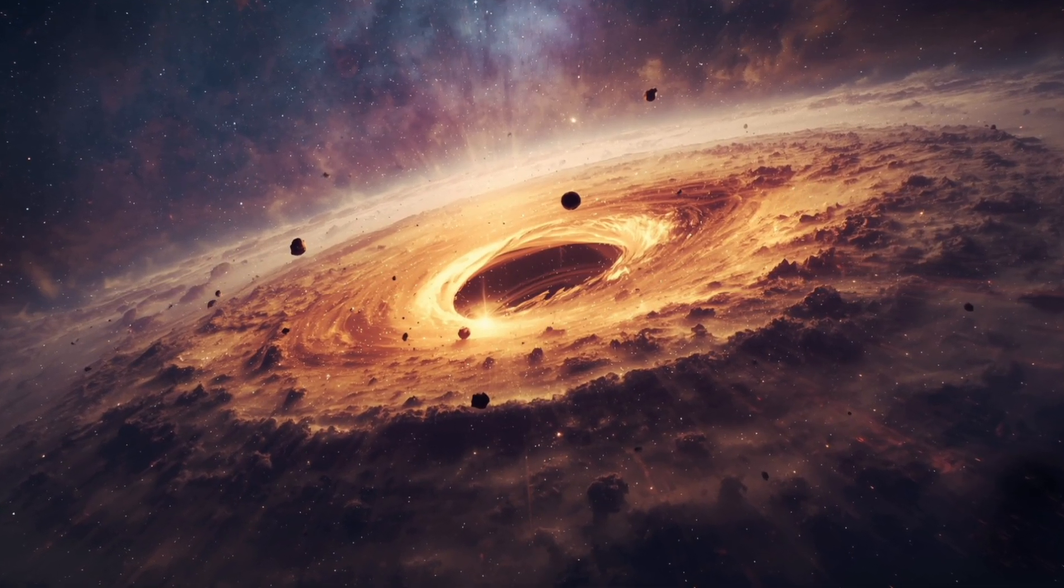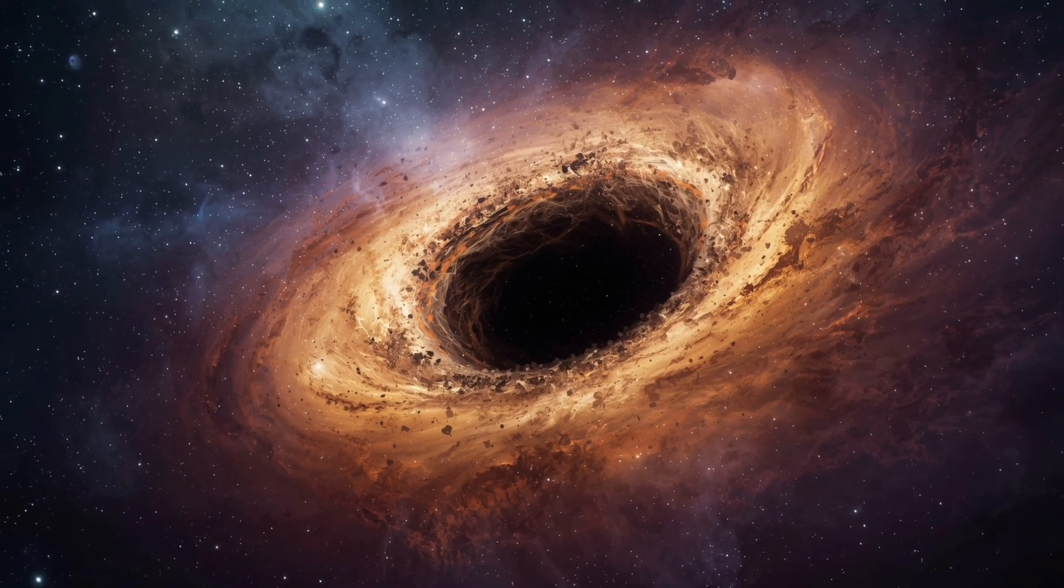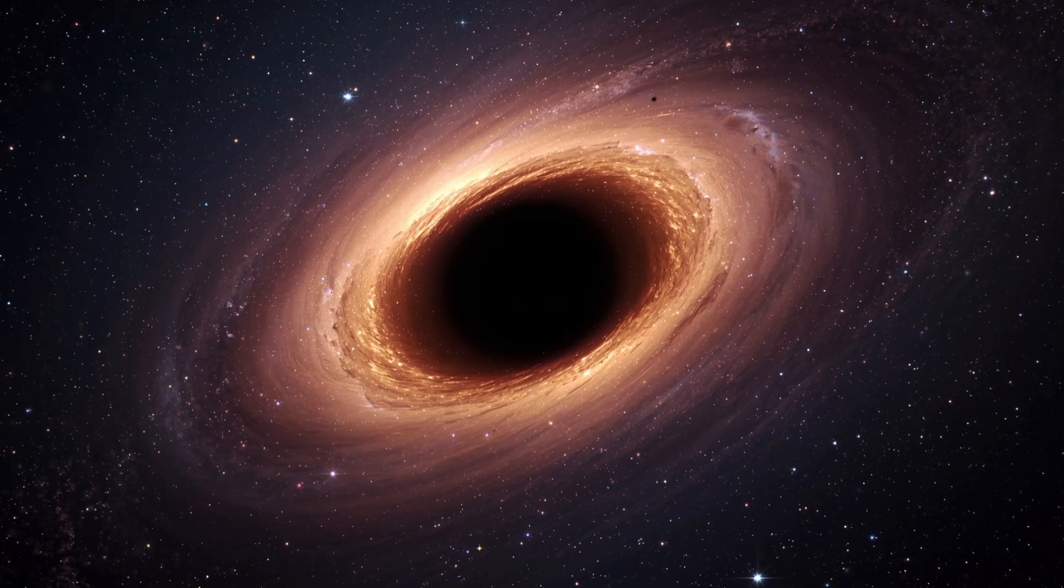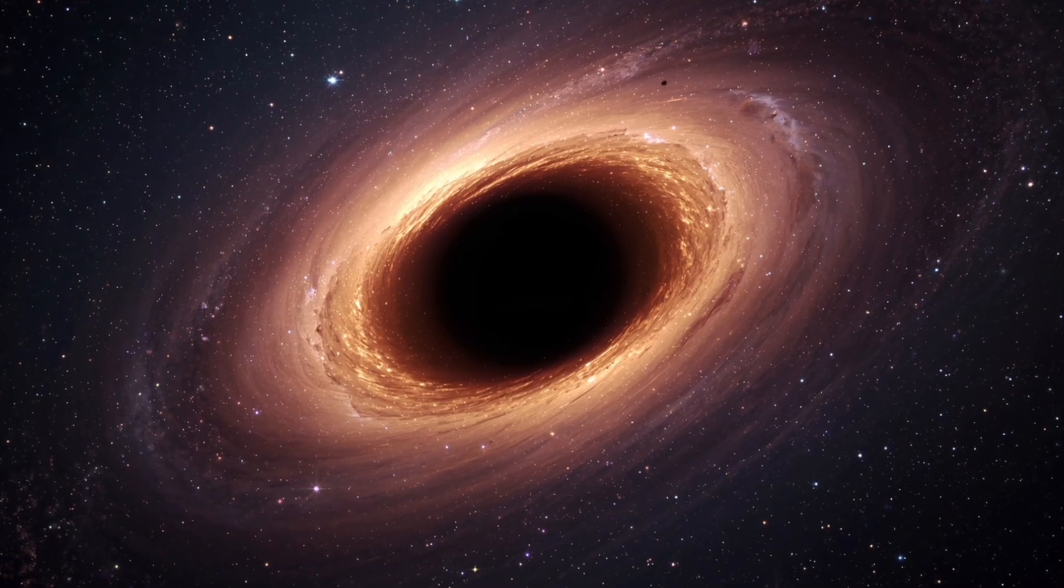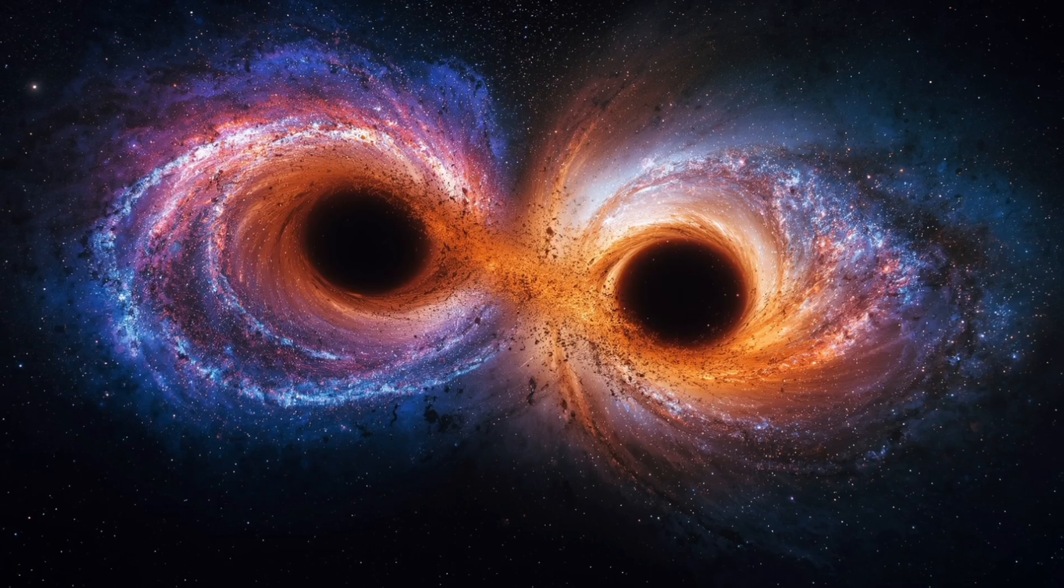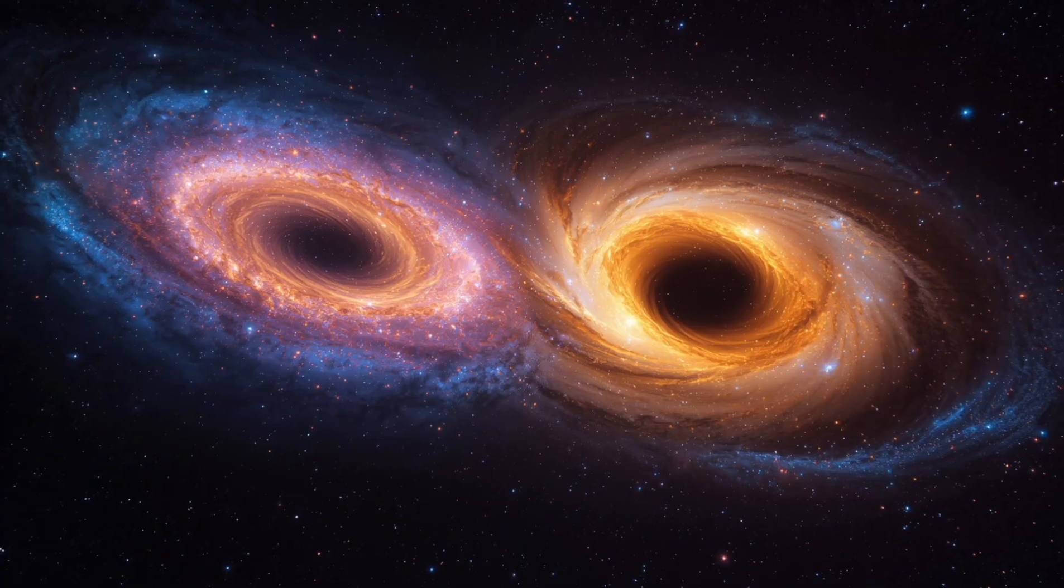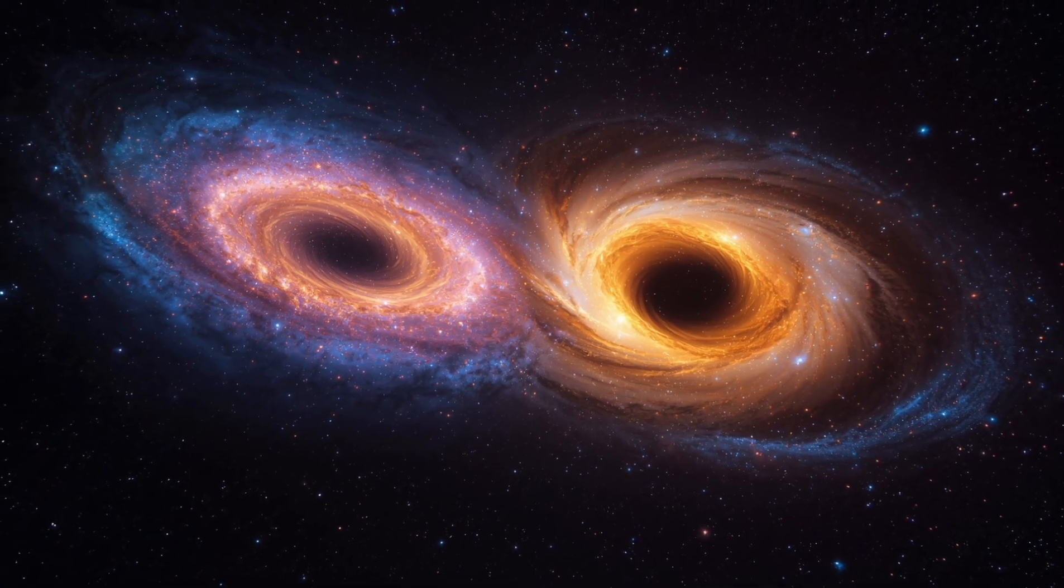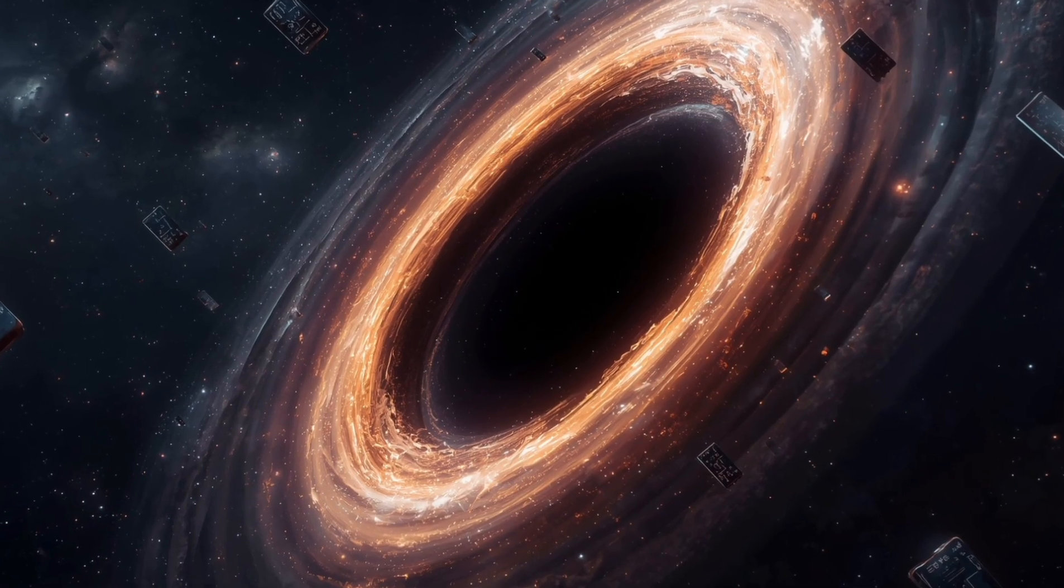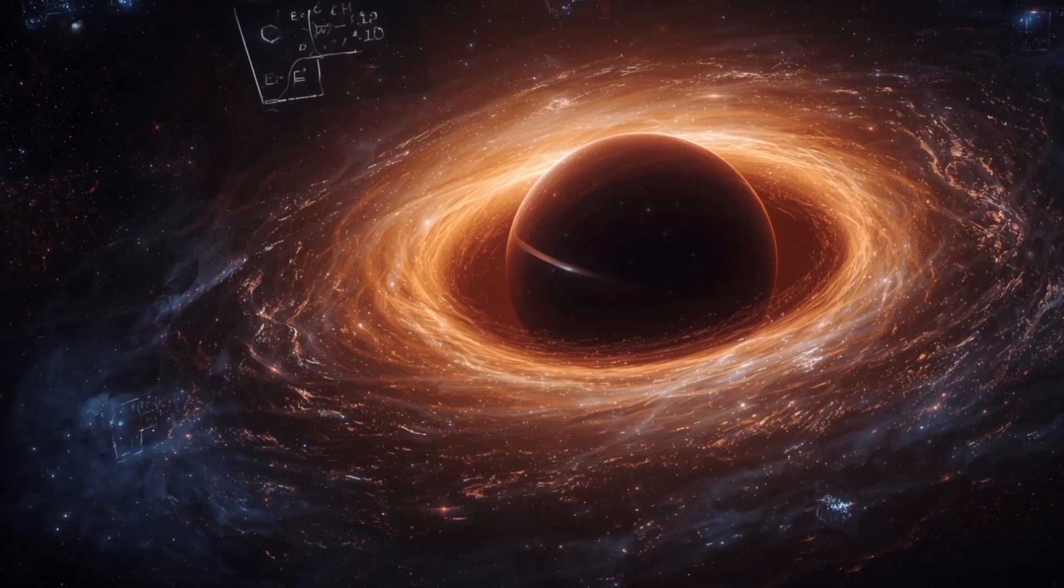One possibility is that Ton 618 began as a direct collapse black hole, forming not from a star but from the collapse of a massive hydrogen cloud in the early universe, creating a black hole tens or hundreds of thousands of times the Sun's mass in one catastrophic event. Another possibility is that its host galaxy underwent repeated mergers with other galaxies, allowing its central black hole to accrete mass at a dramatically increased rate. Yet even these explanations struggle to fully justify the scale we observe.